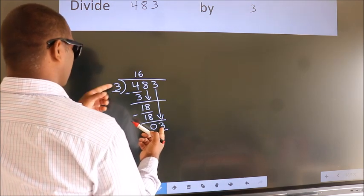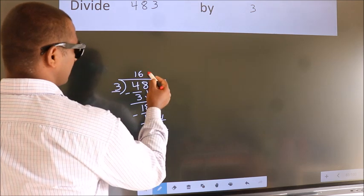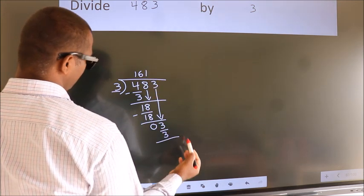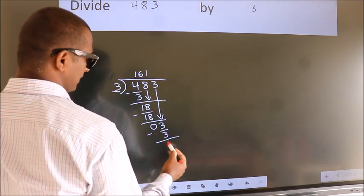When do we get 3? In the 3 table: 3 once 3. Now we subtract. We get 0.